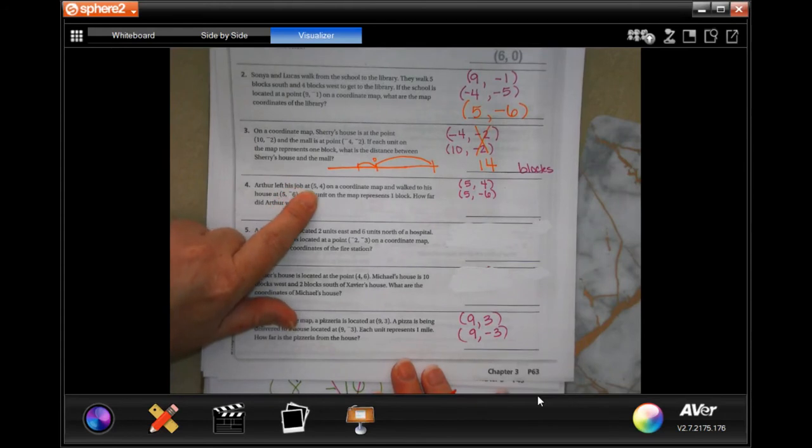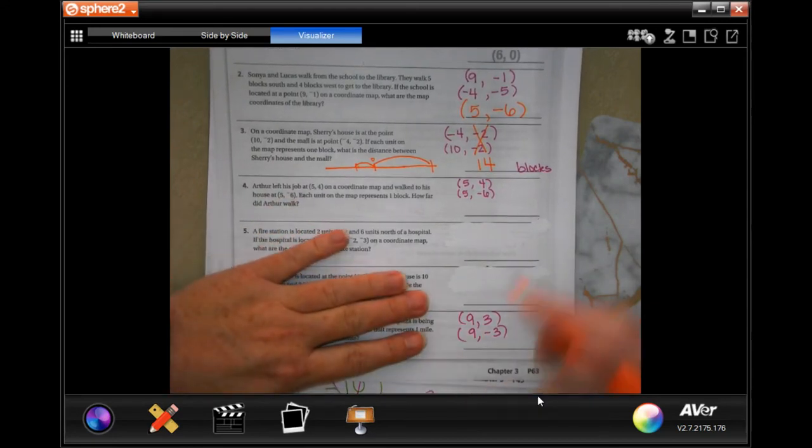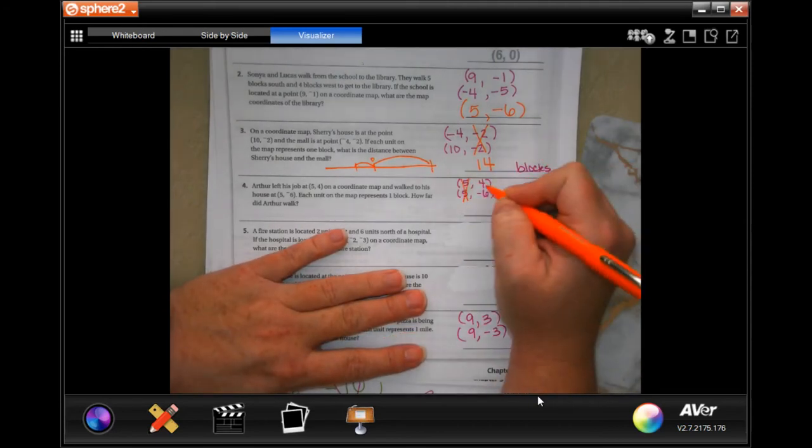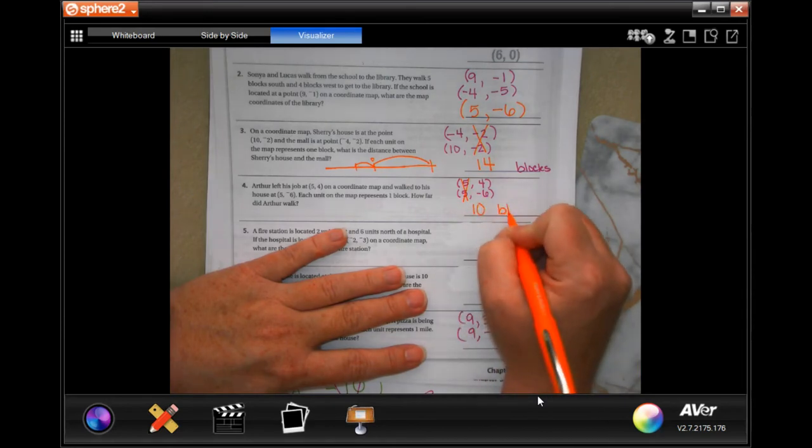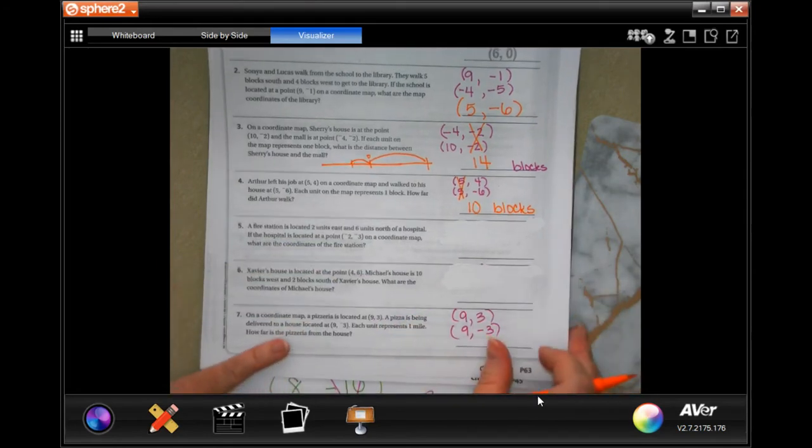Arthur left his job at 5, 4 on the coordinate map and walked to his house at 5, negative 6. Each unit of the map represents one block. How far did Arthur walk? Well, you'll notice 5 and 5 cross them off. 4 and 6, 10 blocks. Negative and a positive, you add them.